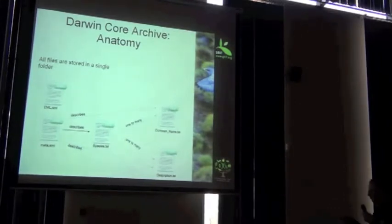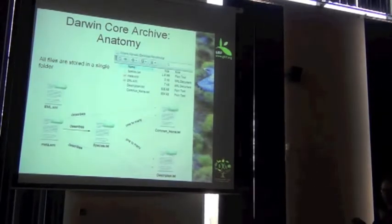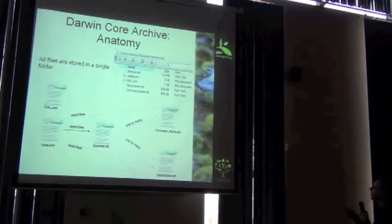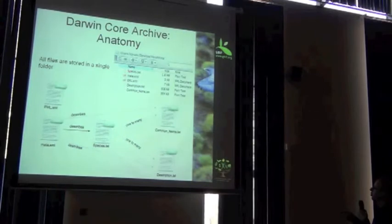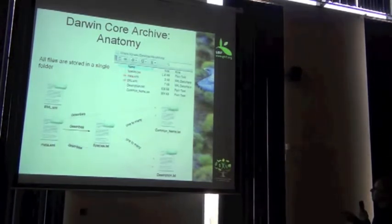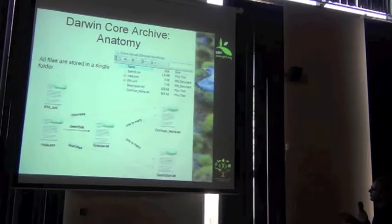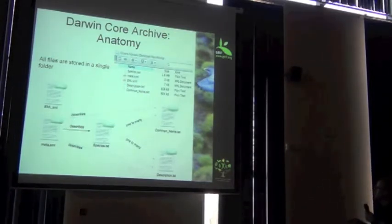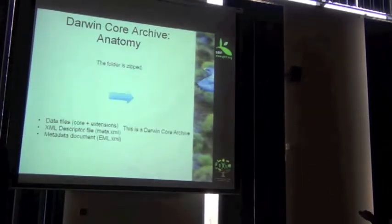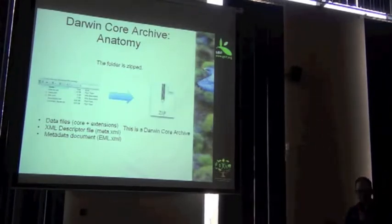Putting them all together, here we've got a Darwin Core Archive. All those different components inside a single directory, zipped. We've got our core file, we've got our metadata file, we've got two extension files. They're all contained in a single folder.